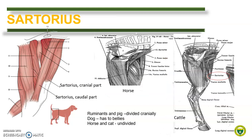Next, we compare the sartorius muscle. The sartorius is a strap-like muscle arising from the ileum and inserts on the medial side of the stifle. In dogs, the sartorius has two muscle bellies called the cranial and caudal part. In ruminants and in pigs, it is divided proximally. However, in horse and in cats, it remains undivided.